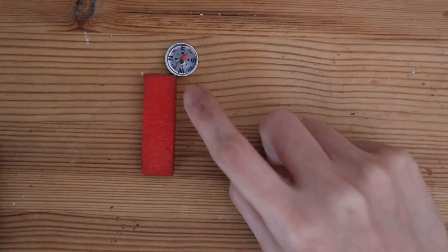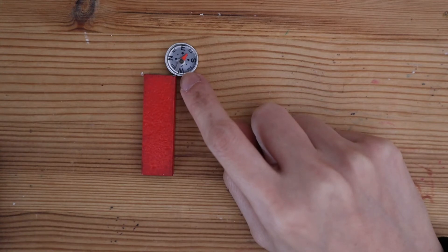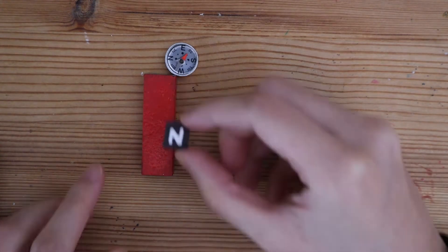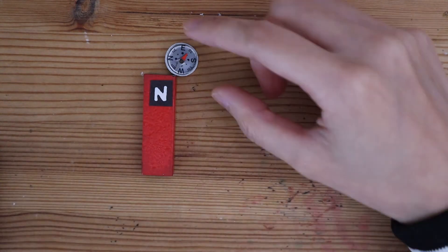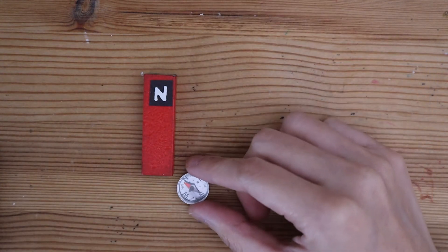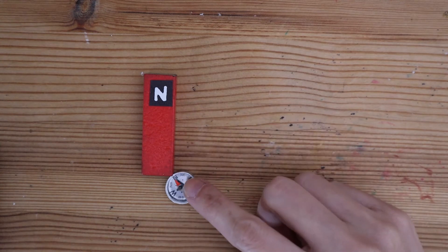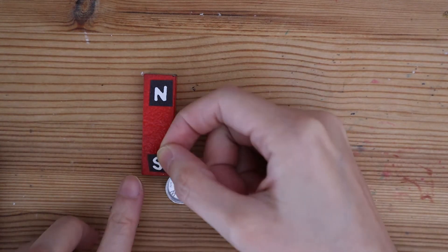So if the south end of the needle is attracted to this side of the magnet, then this side of the magnet must be north because opposites attract. If the compass needle's north is attracted to this end of the magnet, then this end of the magnet is south.